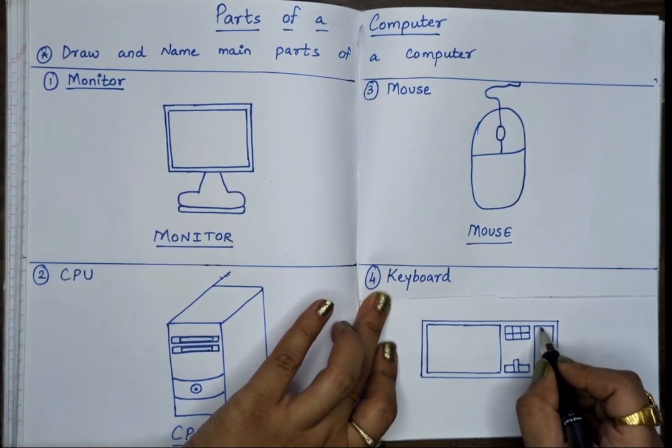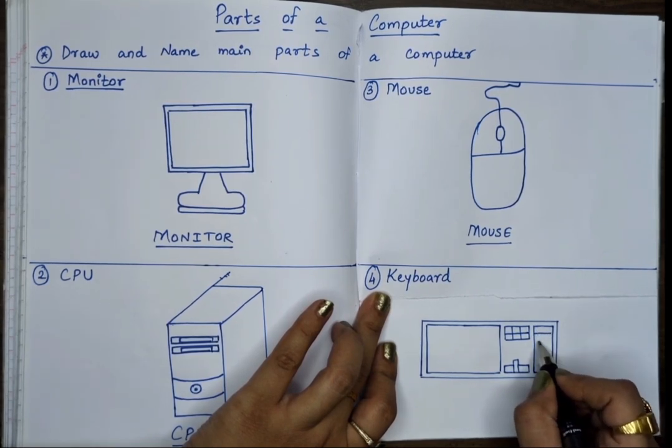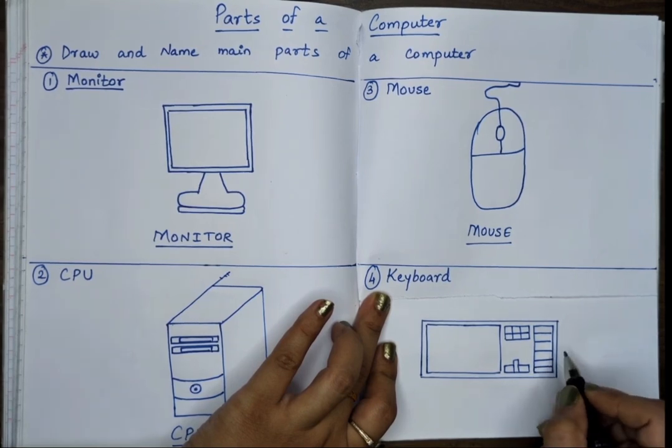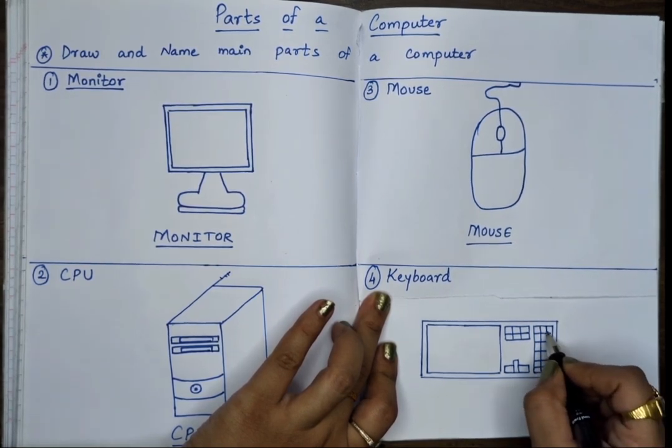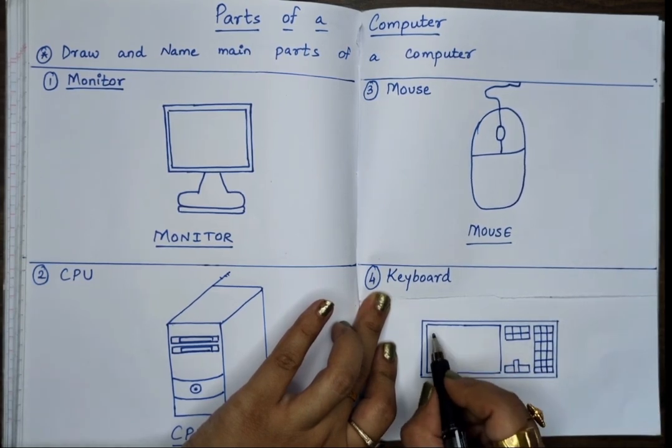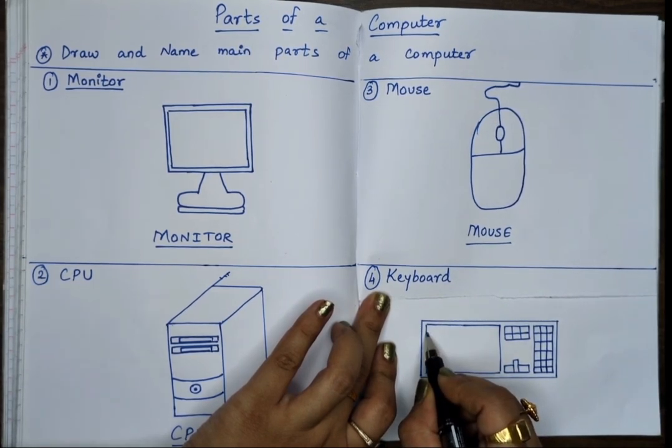Yes. So we are drawing the keyboard. So today we have learnt monitor, mouse, CPU and keyboard. The four main parts of the computer.